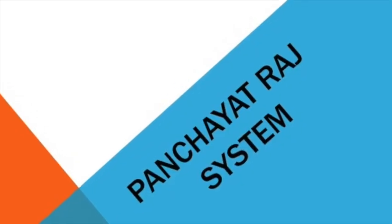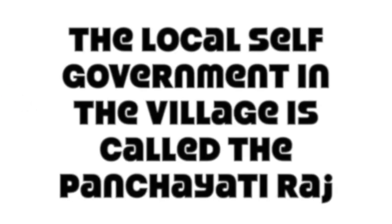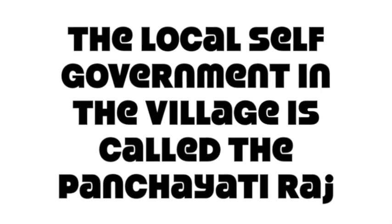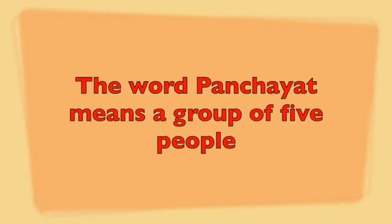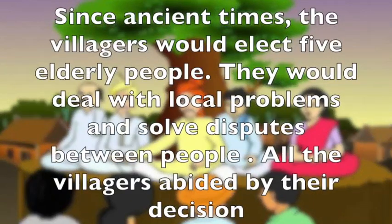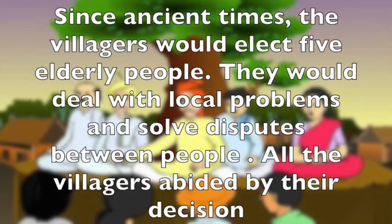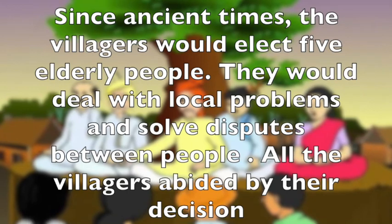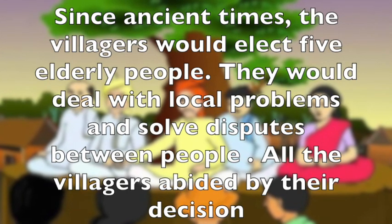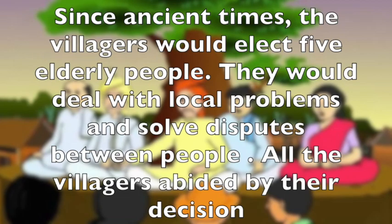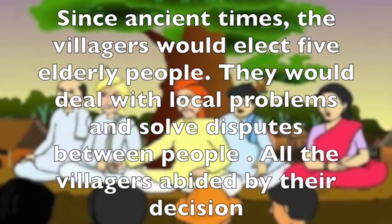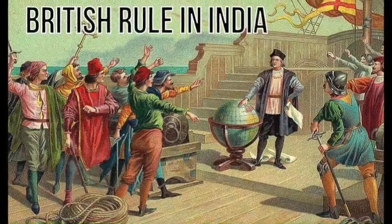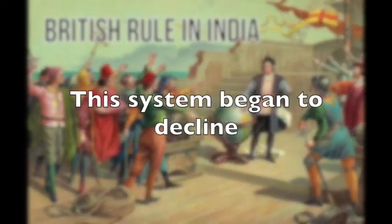The Panchayati Raj System. The local self-government in the village is called the Panchayati Raj. The word Panchayat means a group of five people. Since ancient times, the villagers would elect five elderly people who would deal with local problems and solve disputes between people. All the villagers abided by their decision. During British rule in India, this system began to decline.